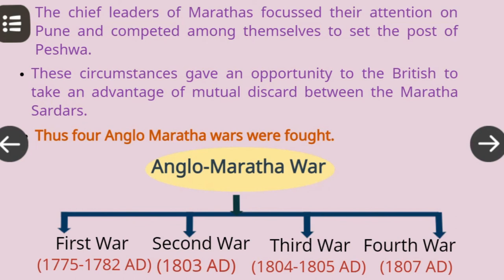Thus, four Anglo-Maratha wars were fought between the British and the Marathas. The First Anglo-Maratha War was in 1775 to 1782. The Second Anglo-Maratha War was in 1803. The Third Anglo-Maratha War was in 1804 to 1805. And the Fourth Anglo-Maratha War was in 1817 to 1818.